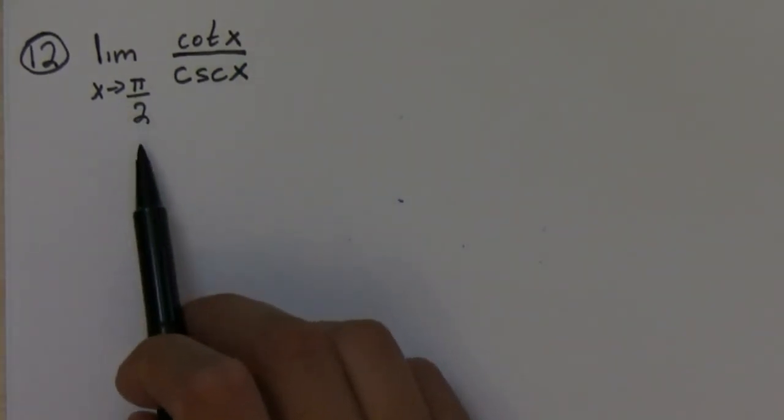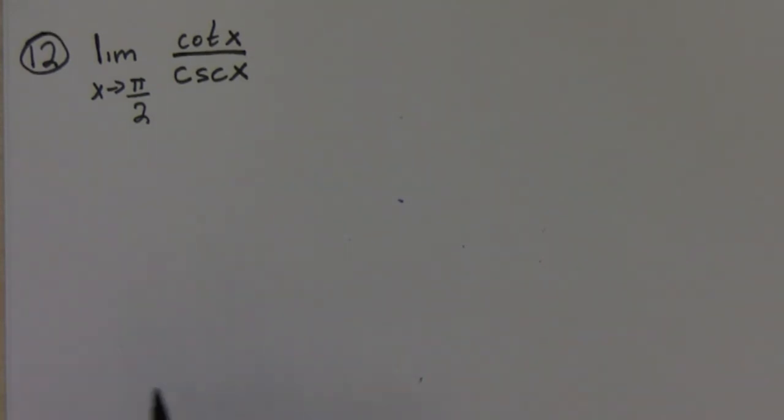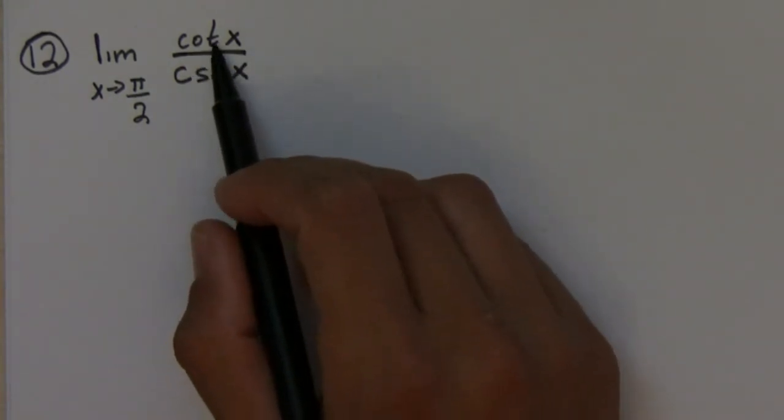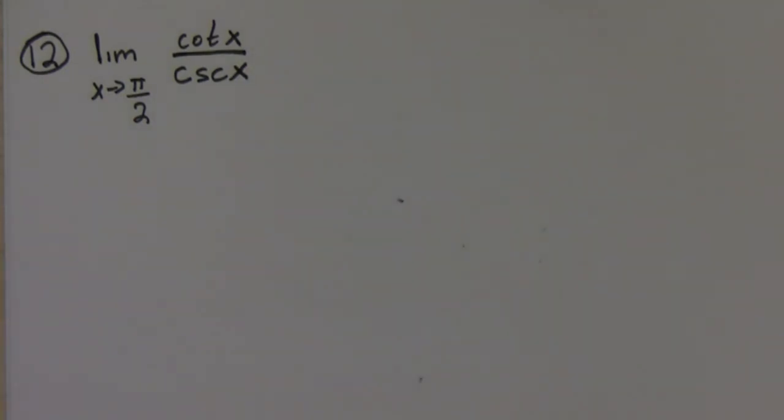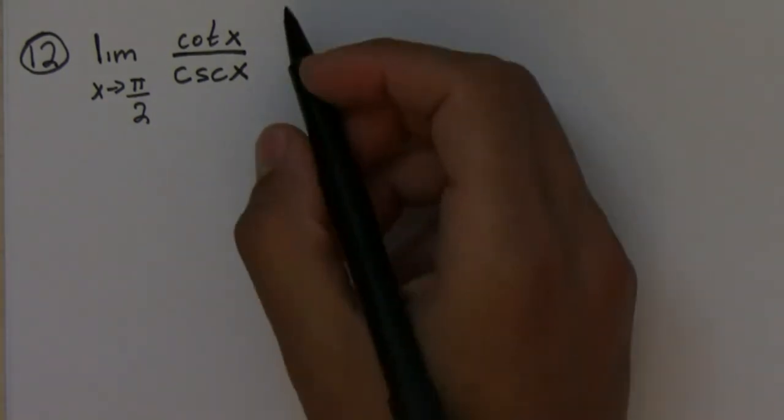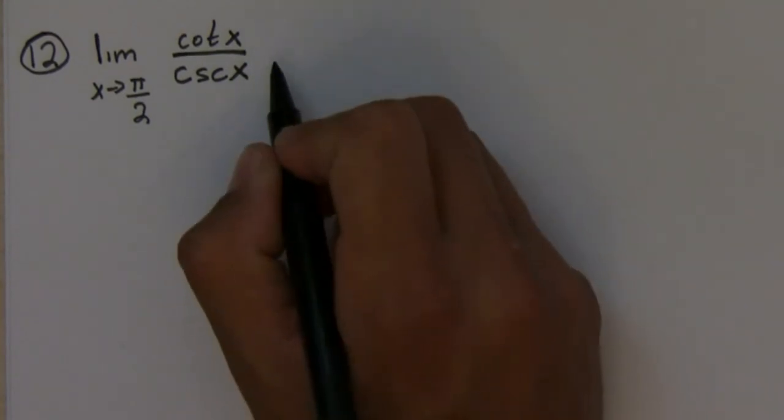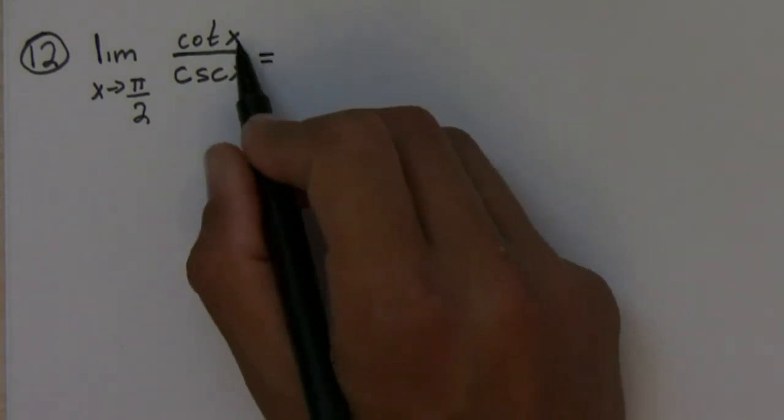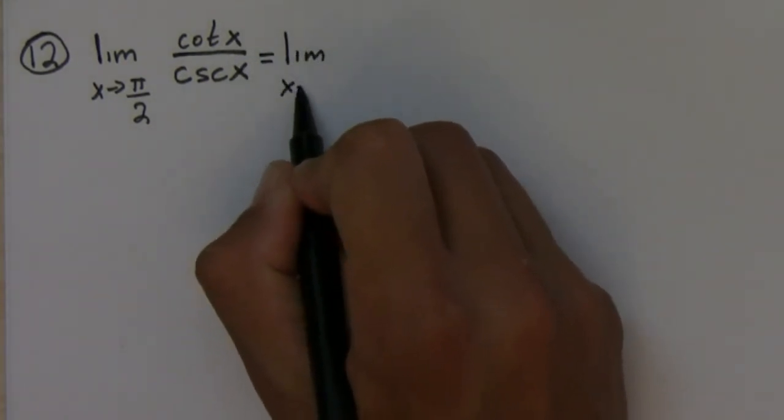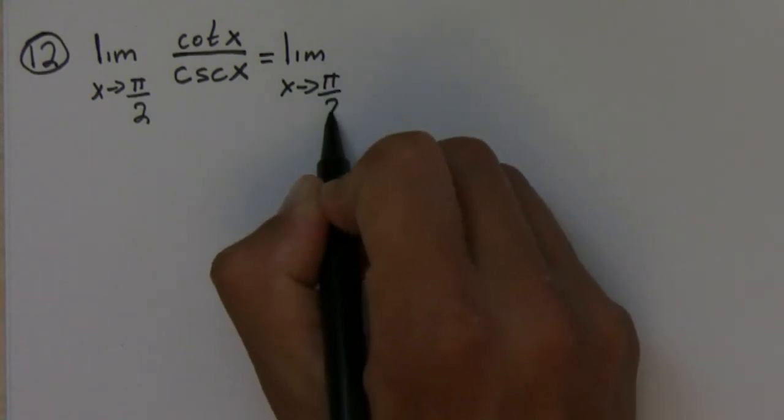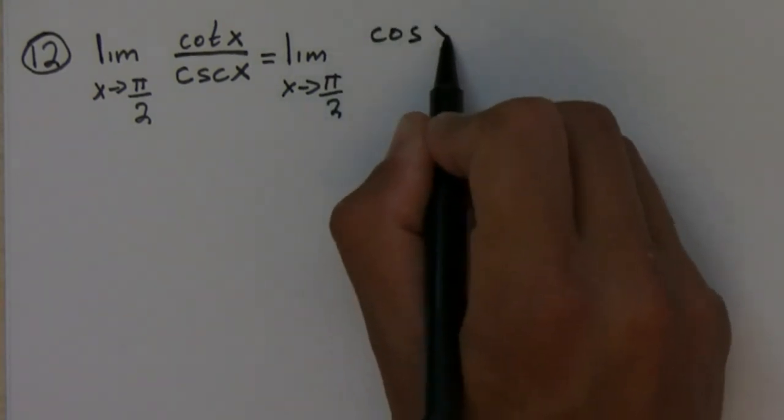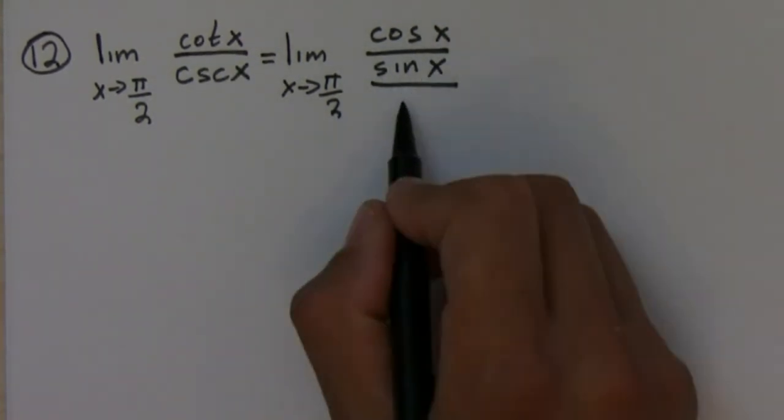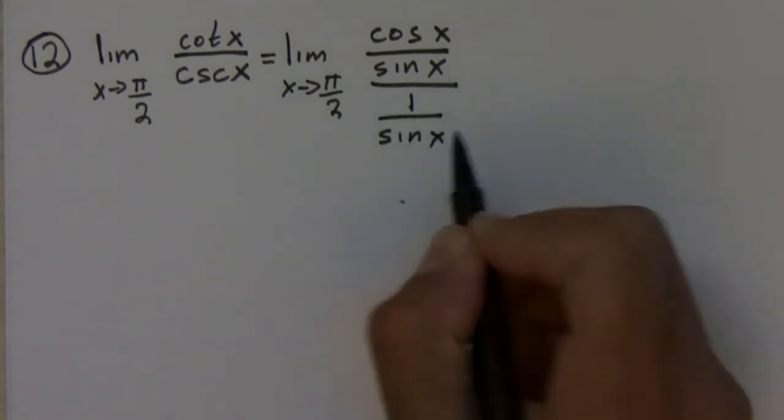Okay, so here we have a trigonometric limit. The first thing that we'll probably try is to switch cotangent and cosecant in terms of sine and cosine. Maybe that will allow us to simplify something. I know that cotangent is equal to cosine over sine, and cosecant is 1 over sine.